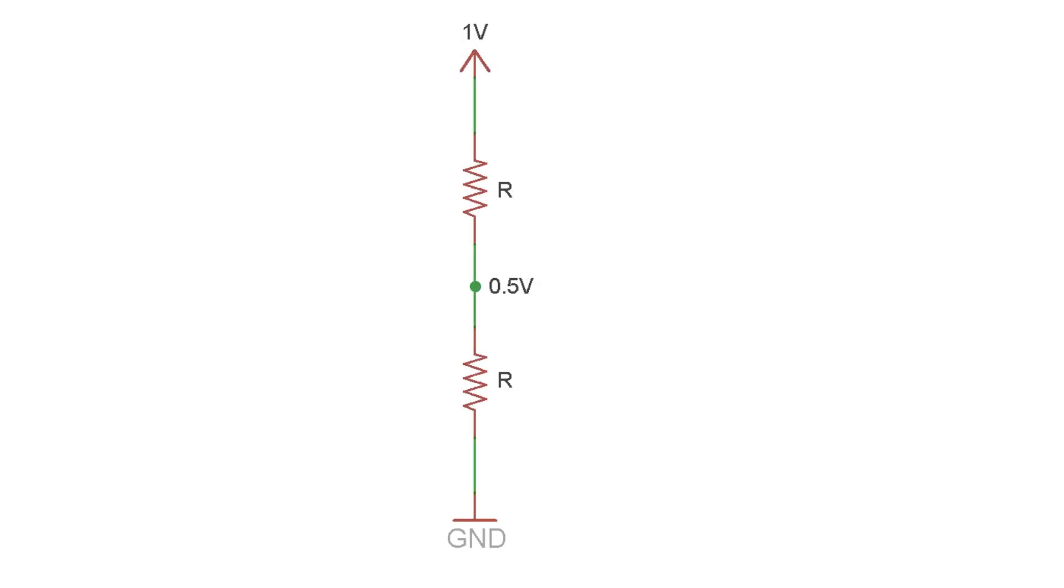If you apply Ohm's law, you'll find that one volt spread across two equal value resistors gives you half a volt in the middle, so you're getting half the voltage. And as you would expect, four equal value resistors would give you a quarter volt, half a volt, and three quarters of a volt.